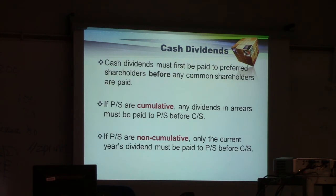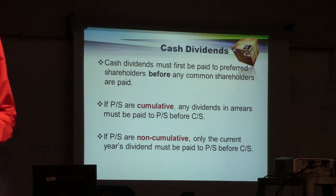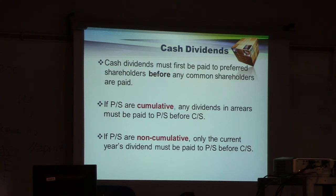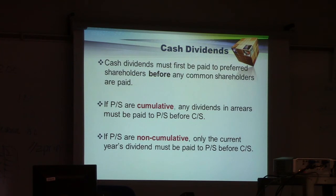Cash dividends must first be paid to preferred shareholders. As you know from previously, preferred shareholders have priority and preference over common shareholders. If preferred shares are cumulative, any dividends in arrears must be paid to preferred shareholders prior to common shareholders receiving their dividends.